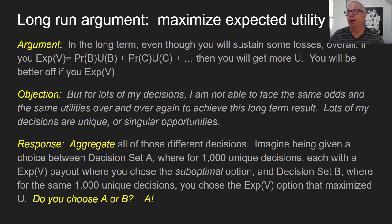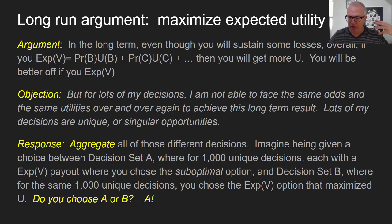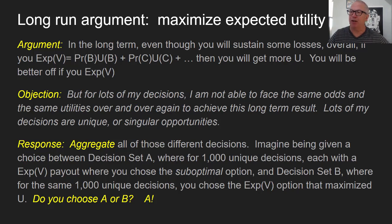The answer is: it doesn't matter. Even if all of your decisions are unique or singular, if we aggregate all of those different decisions, here's what happens. Imagine a choice between decision set A, where you made a thousand unique decisions each with an expected value payout but chose the suboptimal option, and decision set B, where for the same thousand unique decisions you chose the expected value option that maximized utility.